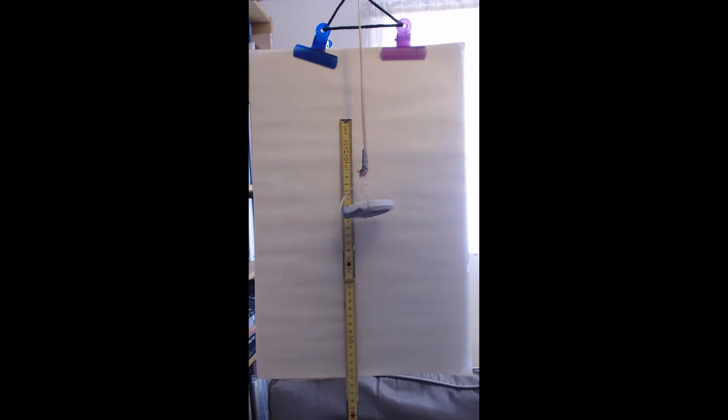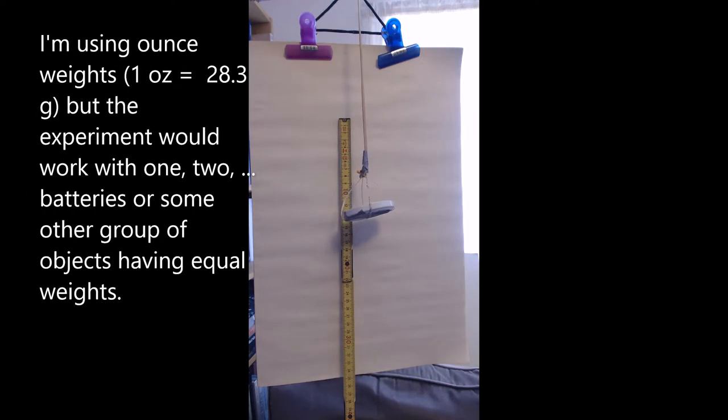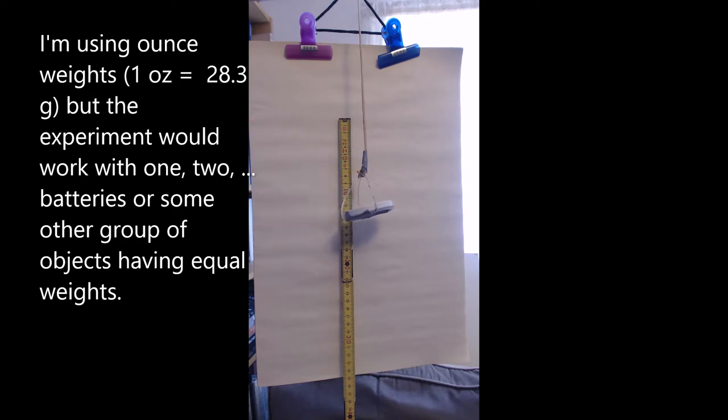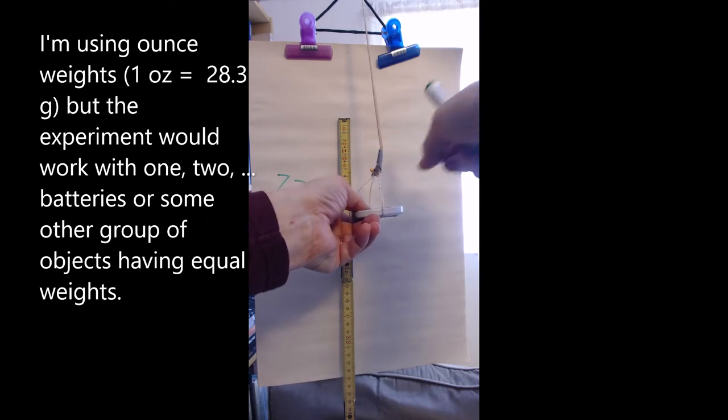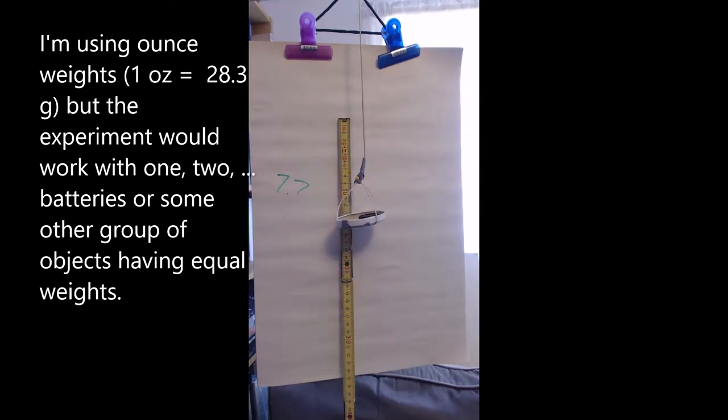Our weights are actually from an old set of kitchen scales, so they're in units of ounces, but it doesn't really matter because we're looking at multiples. As it sits at the moment, our orange marker is at about 7.7 centimeters on this scale. Let's add our first weight. That takes us up to about 8.7. This is very approximate.